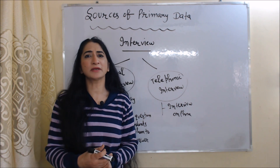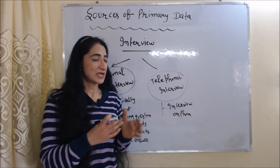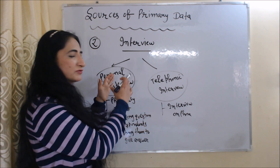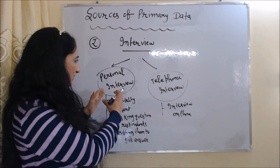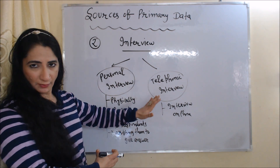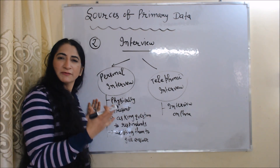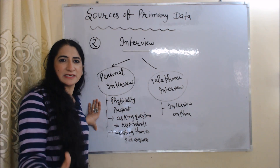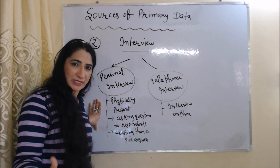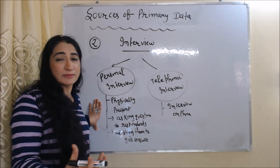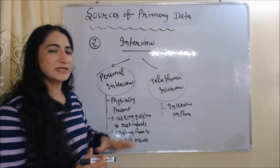The next source of primary data is the interview method. An interview can be personal or telephonic. In a personal interview, you are physically present and asking questions to your respondent and assisting them to give answers. In a telephonic interview, you simply ask questions through the phone.